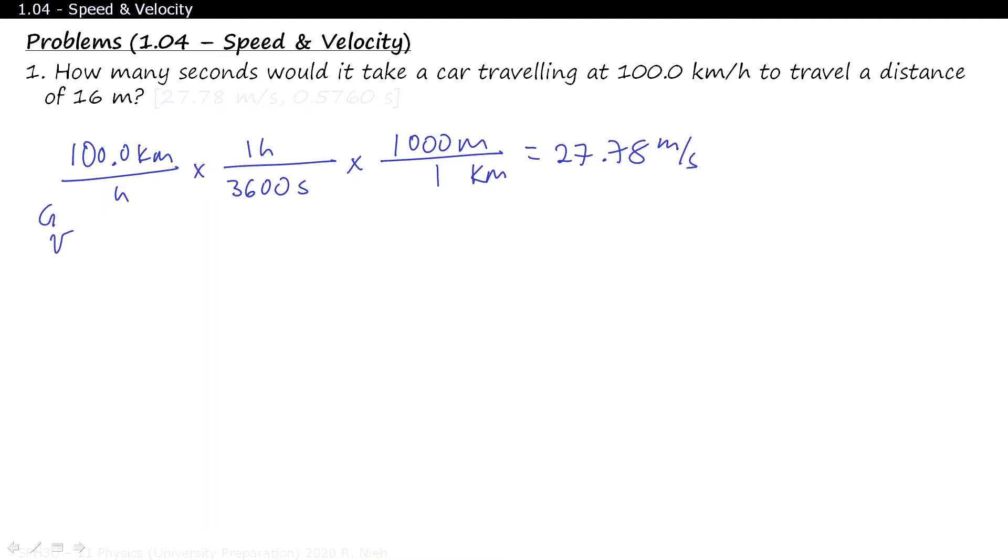So we know our givens: velocity equals 27.78 meters per second, and distance is 16 meters. We're trying to look for time. D equals V delta T, so delta T equals delta D divided by V. A distance of 16 meters divided by 27.78 meters per second would work out to an answer of 0.5760 seconds.